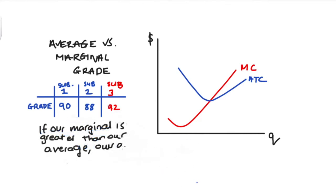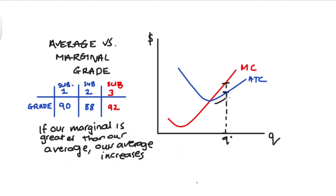When the marginal grade is higher than the average, the average increases. This can be generalized back to our costs: when our marginal cost is higher than our average, our average will increase. Looking back at our diagram, for any quantity where our average is increasing, you can see that the marginal is above the average — the marginal is pulling the average up.